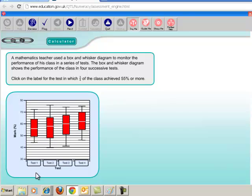So we have to click on just one of these answers to say which test do three quarters of the pupils achieve 55% or more. So the area we're looking for is actually the lower quartile and above, because that's from here to here is 25%, another 25%, another 25%. So that's three quarters of the class, which is 75%.